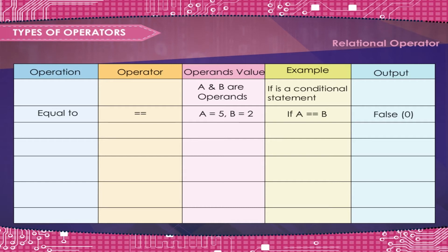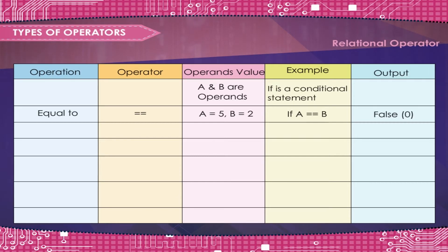Equal to: A is equal to 5, B is equal to 2. If A equal to B — False, 0.